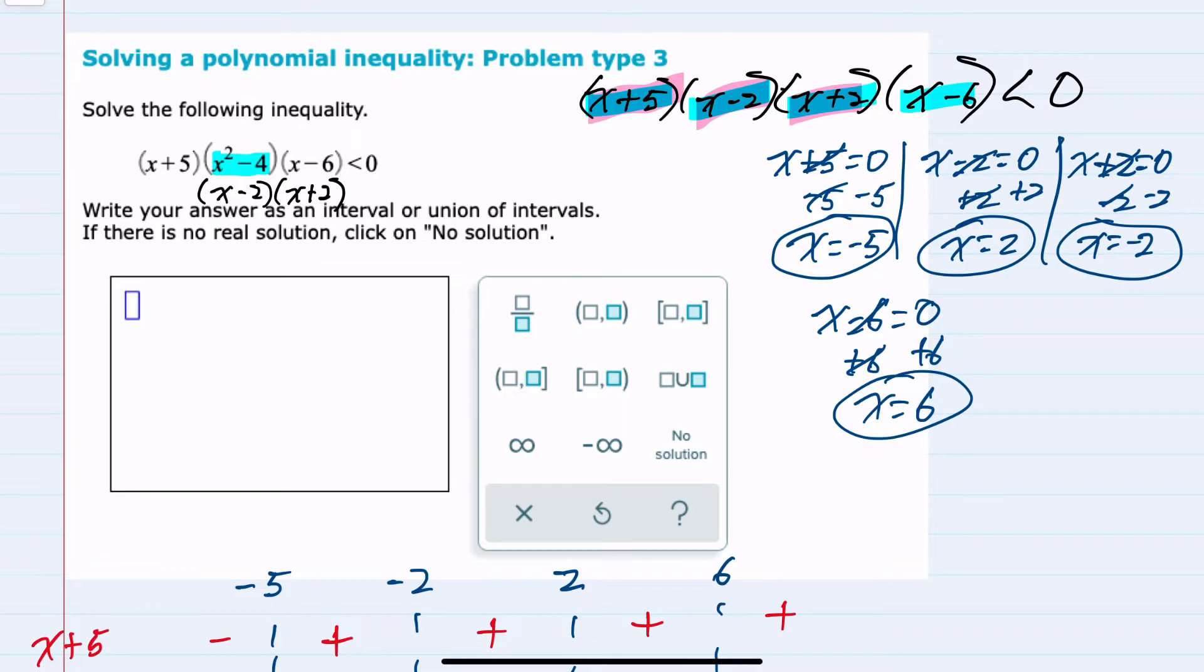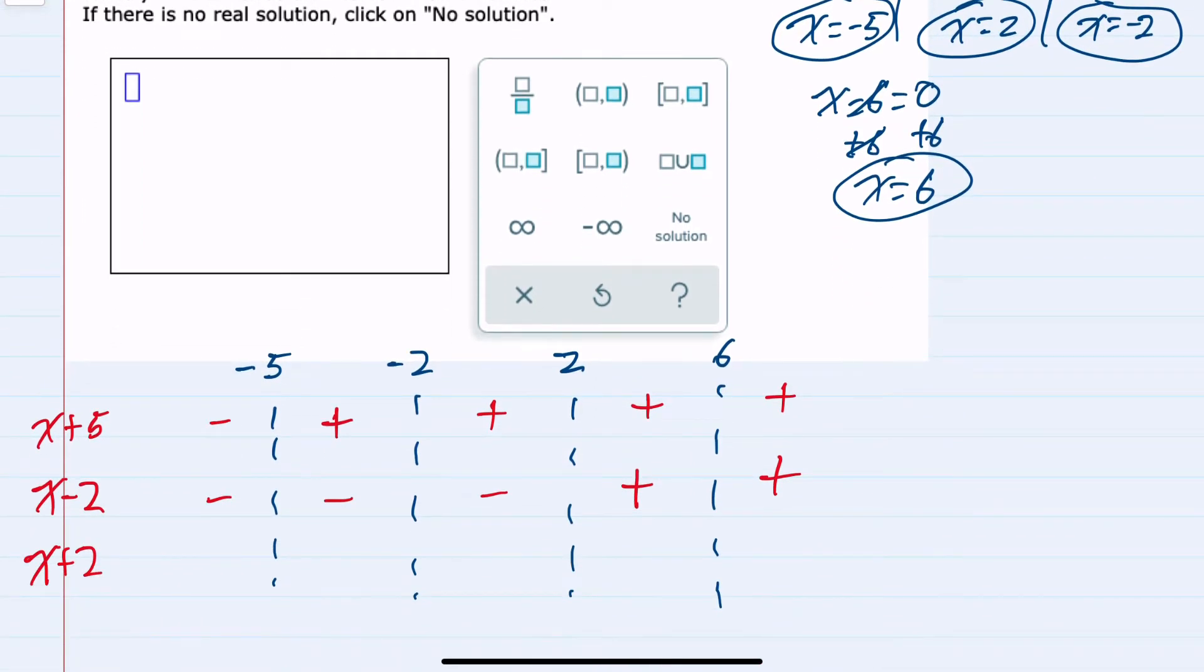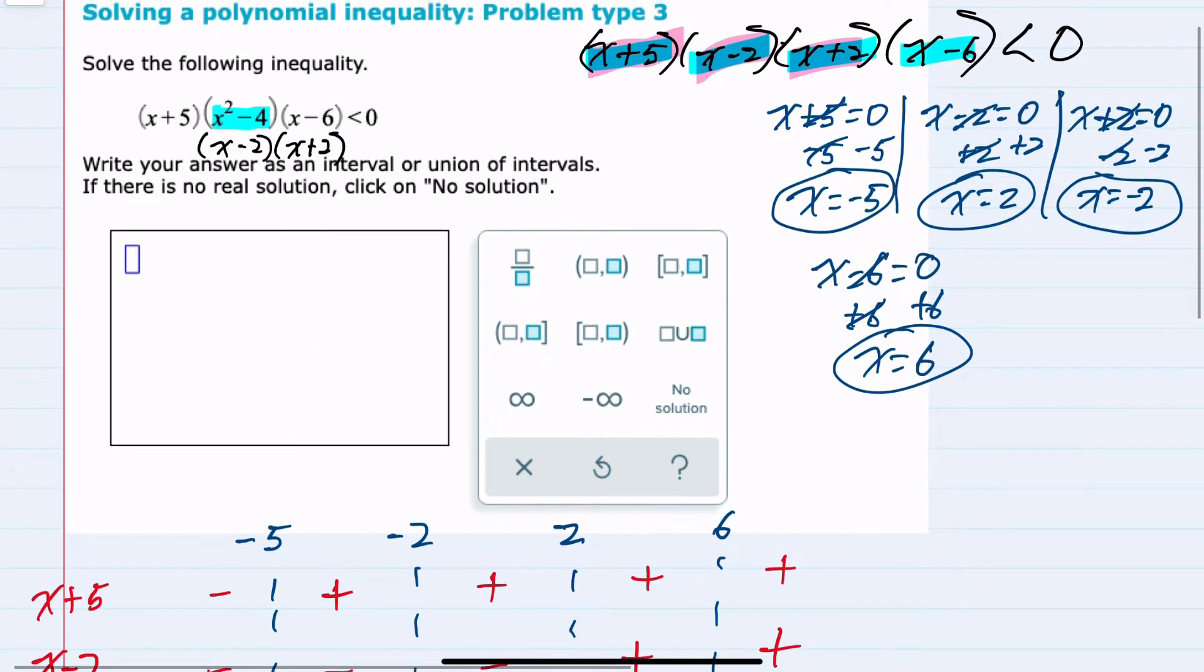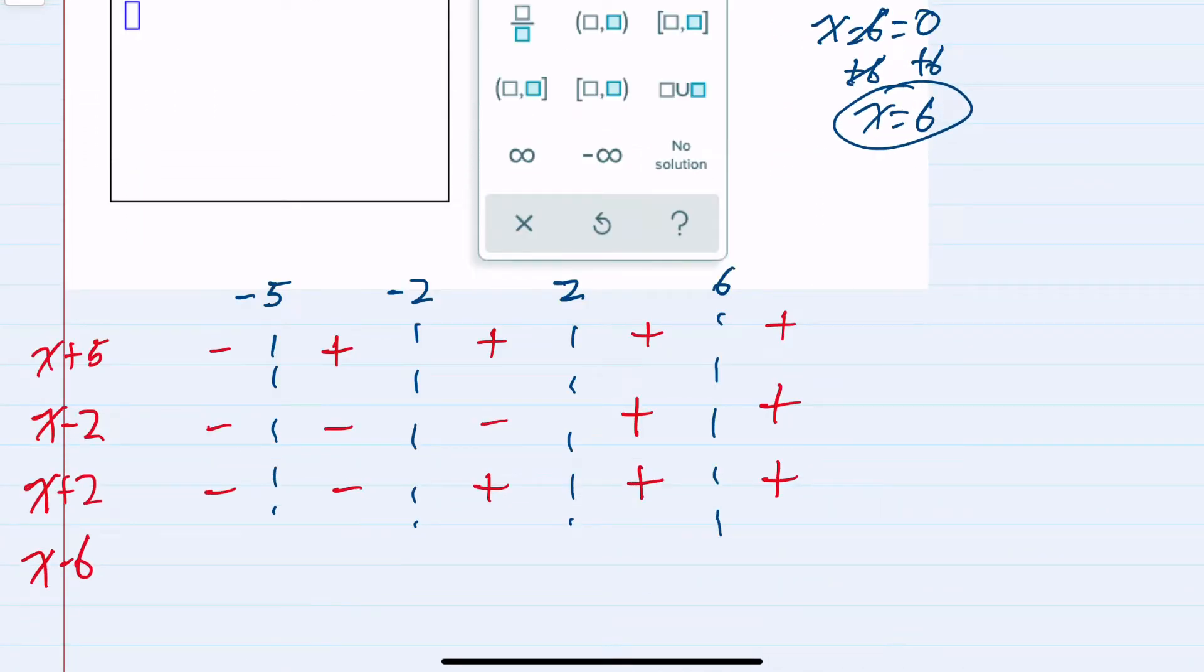Next we have x plus 2. For x plus 2, any value bigger than negative 2 would give me a positive, and any value less than negative 2 would give me a negative. And then our last factor is x minus 6. Here for any value greater than 6, it would be positive. Any value less than 6 would be negative.